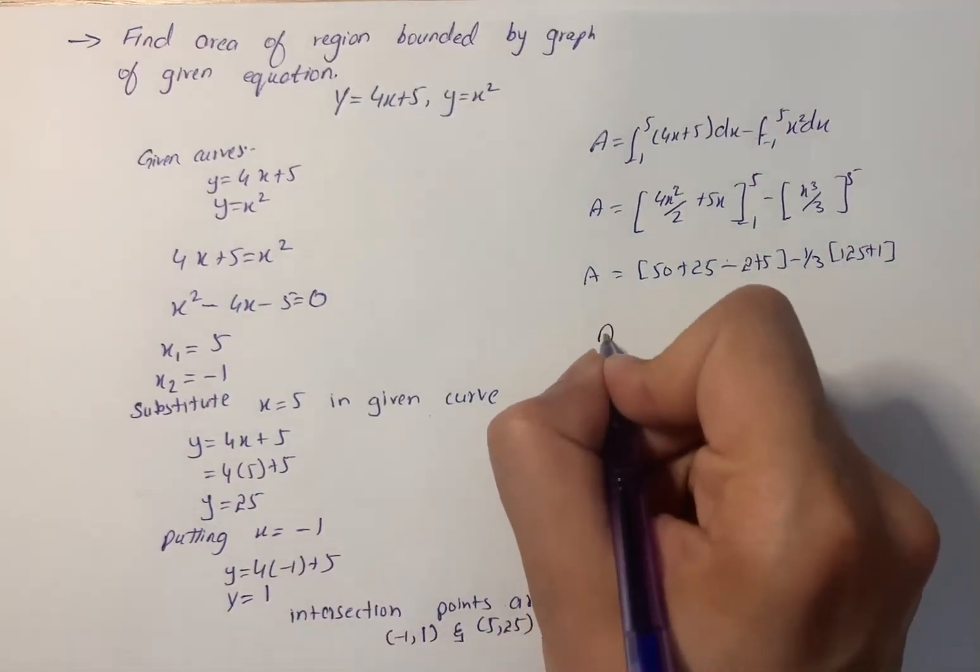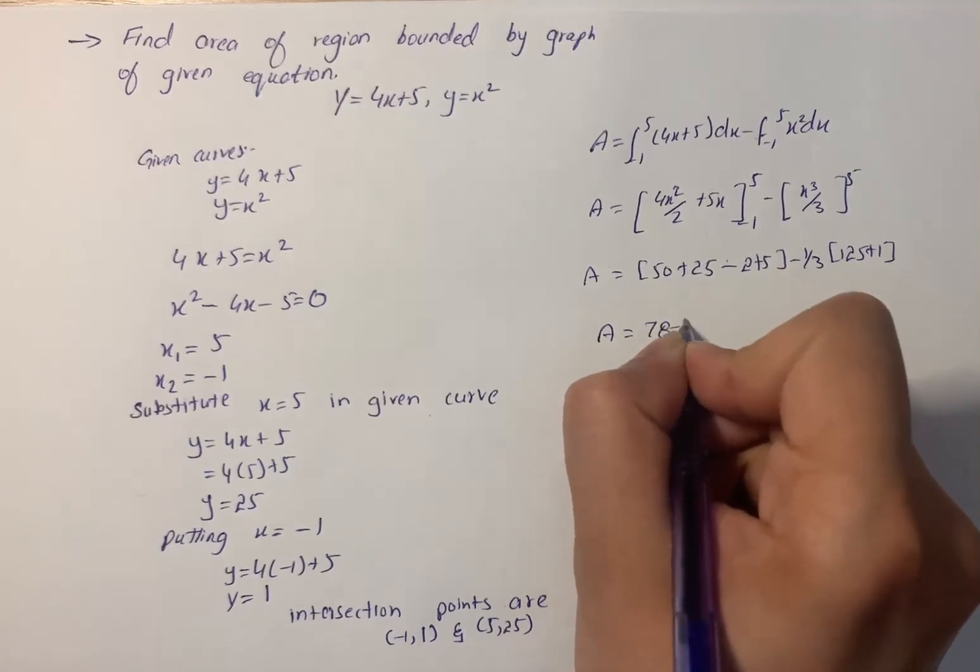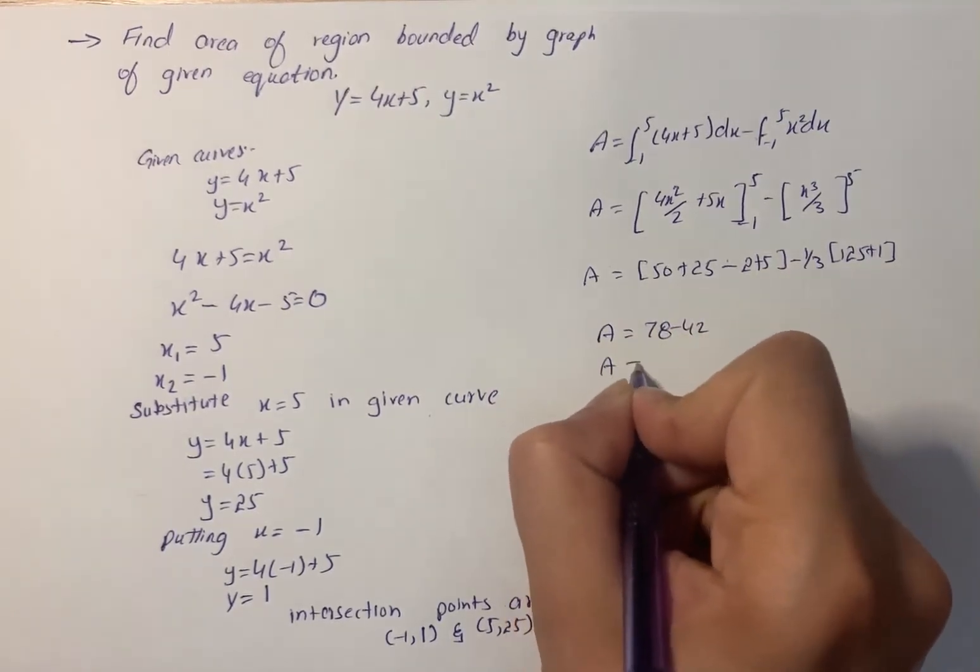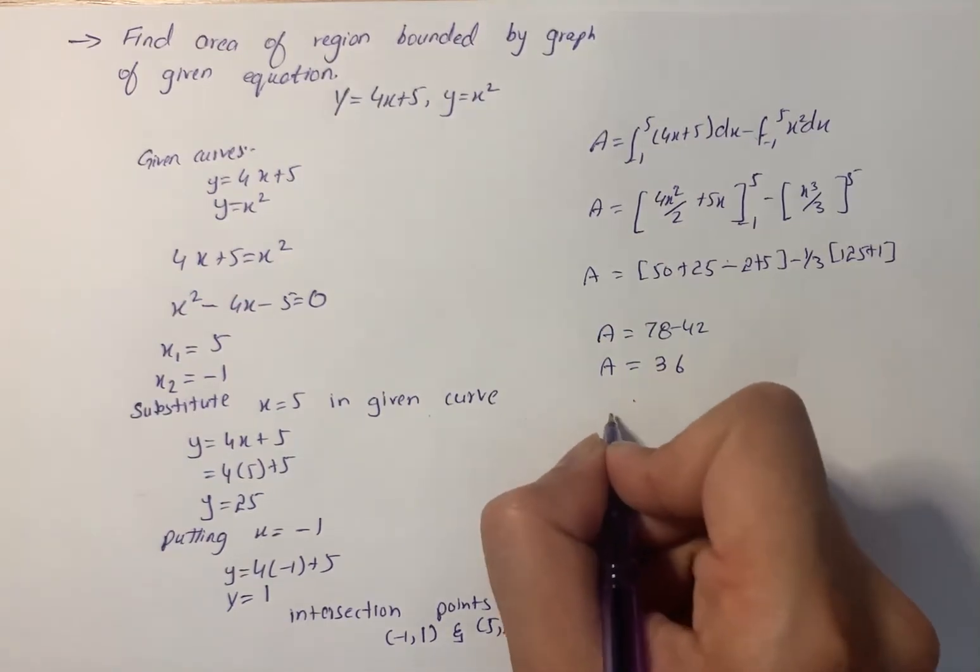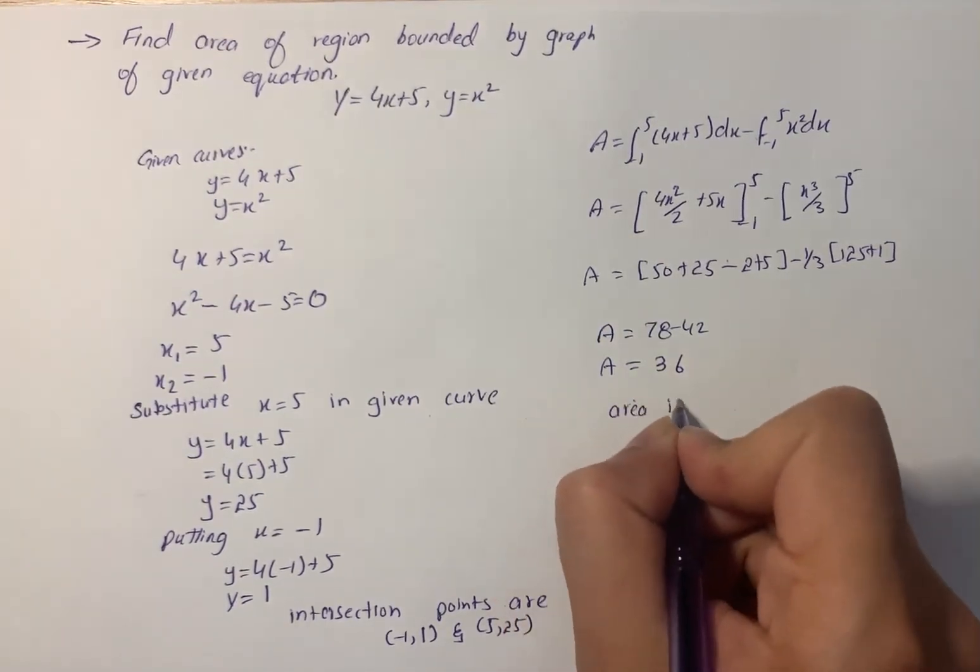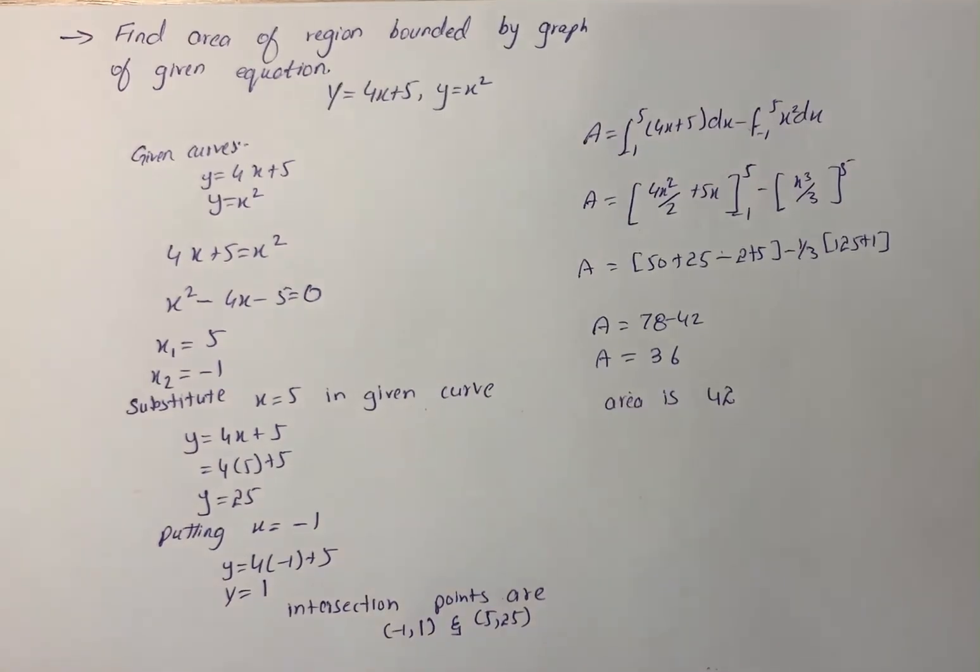A equals 78 minus 42, and A equals 36. So the area is 36 - that is our solution for the given question.